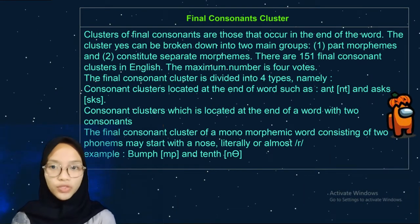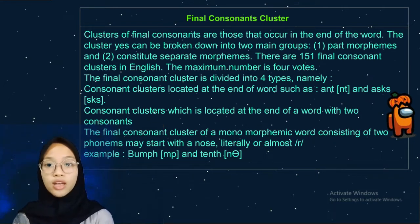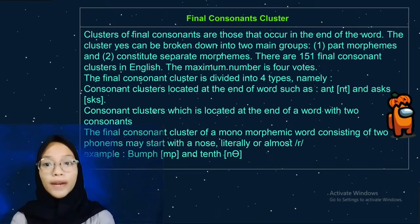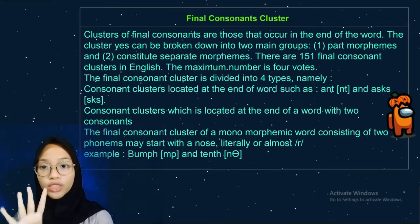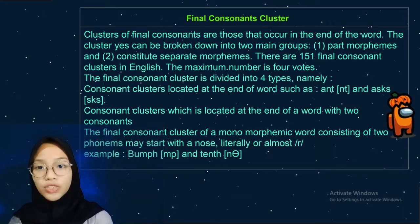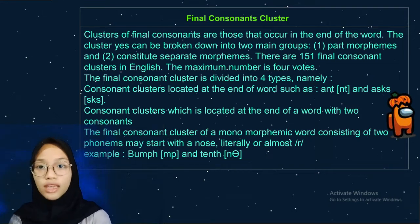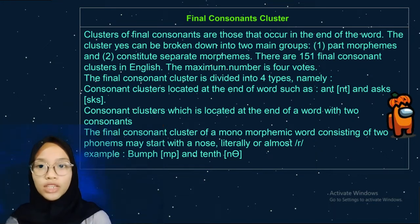Final consonant clusters are used at the end of words. These clusters can be broken into groups: those that form part of morphemes, and those that constitute separate morphemes. There are 151 final consonant clusters in English, with a maximum of four types. The first type includes consonant clusters located at the end of the word, such as AND, AND with J, ASK, and SKS. The second type consists of consonant clusters at the end of the word with two consonants.